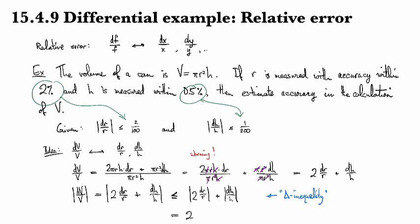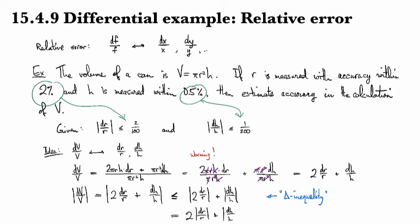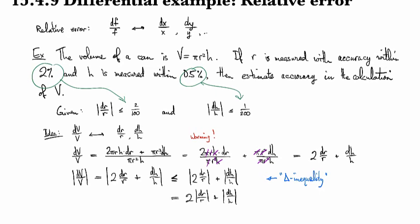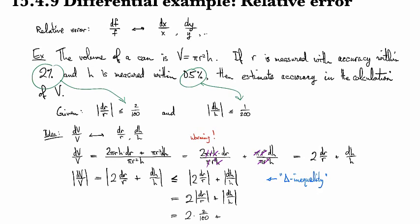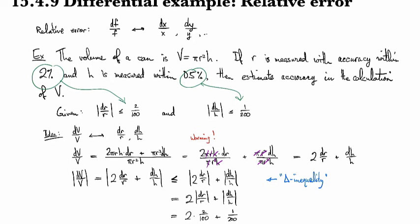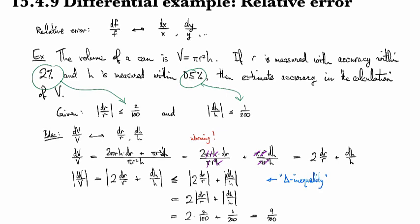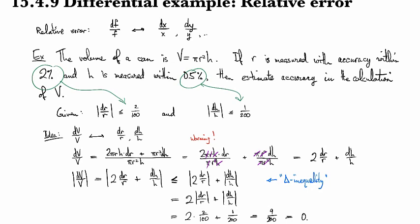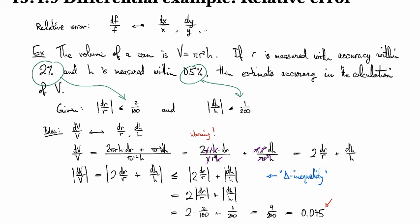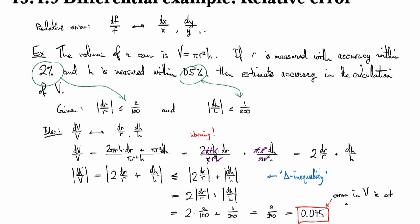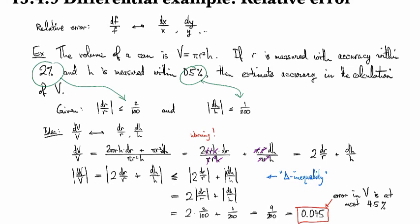Then I can pull out the 2, and then I can look for the actual values that were given. And so this was 2 over 100, and 1 over 200, which gives me 9 over 200, which is 0.045. So this tells me that the error in V is at most 4.5%.